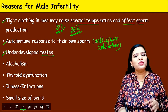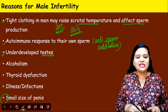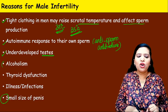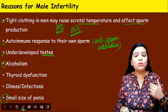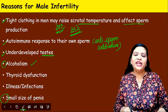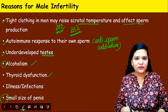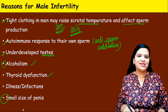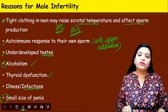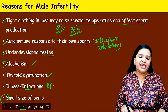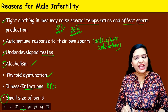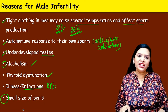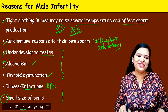Autoimmune responses against the man's own sperms can also occur — where the man produces anti-sperm antibodies that kill all the sperms he produces, leaving no live sperms, making him infertile. Underdeveloped testes — small testes or small penis — are malformations that also cause infertility. Alcohol consumption can lead to infertility. Thyroid dysfunction, both hyperthyroidism and hypothyroidism, causes problems. Illnesses or reproductive tract infections like chlamydia, AIDS, gonorrhea, and syphilis may also cause male infertility.